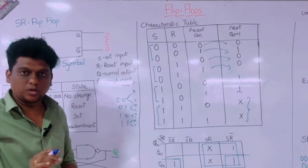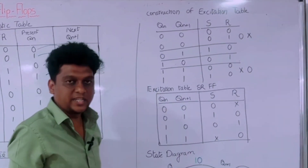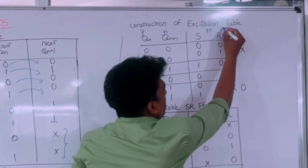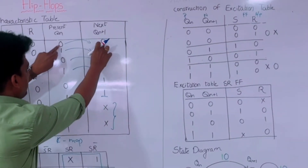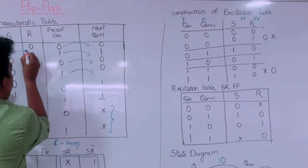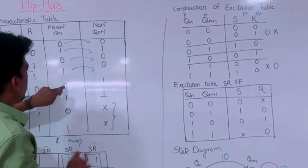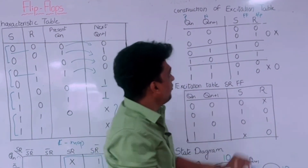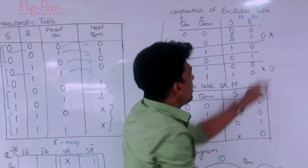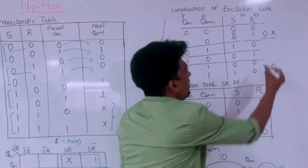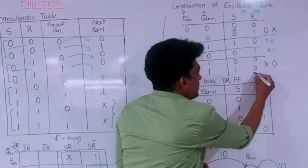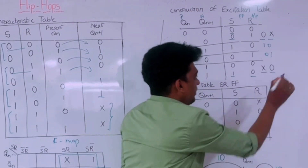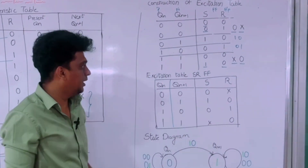The SR flip-flop provides two states: set and reset. Now the excitation table: the present state and next state are listed, and the corresponding flip-flop inputs are defined. For the combination 0,0 to 0,0 we write the inputs 0,0 and 0,1. For 0,0 to 0,1 the input is 0,1. For 0,1 to 0,0 the inputs differ. Where S is common as 0 but R is changing, we place X. Similarly for present state 1 transitions where one value is common and the other varies, we use X.